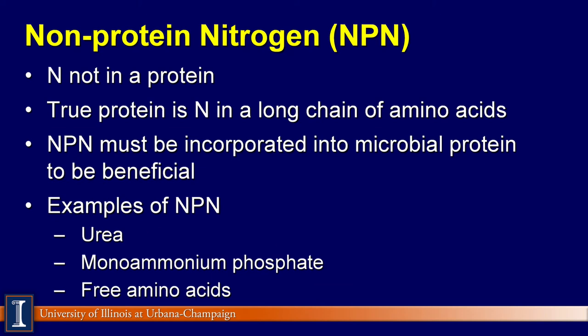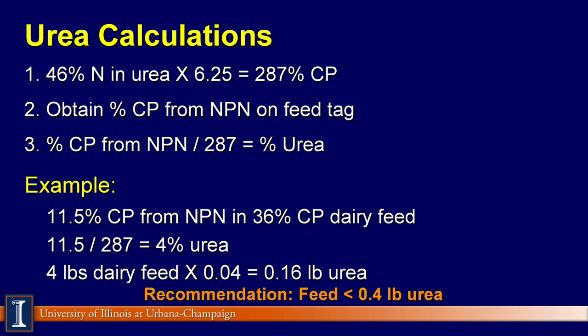For non-protein nitrogen to be utilized by dairy cattle, the animals must be old enough for the rumen to be functional, and the non-protein nitrogen must be incorporated into microbial protein, which upon digestion in the small intestine contributes amino acids to the cow. Non-protein nitrogen is sometimes added to feeds for dairy cows and is usually supplied as urea.